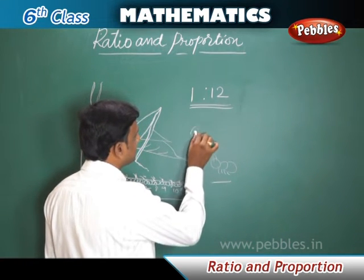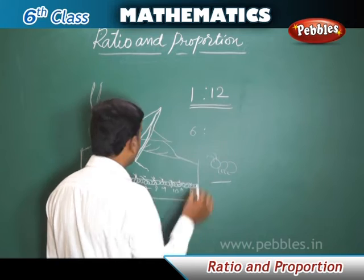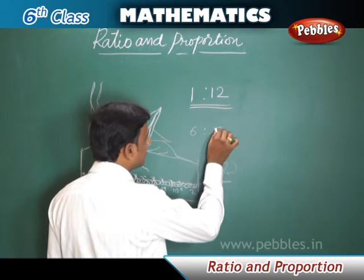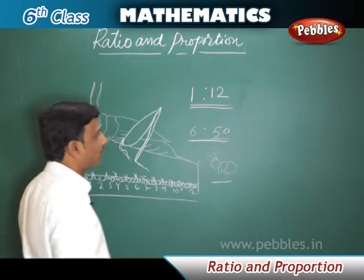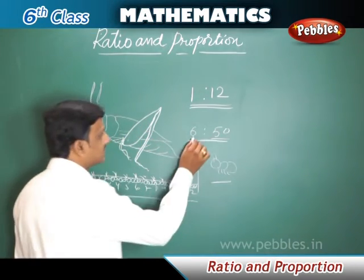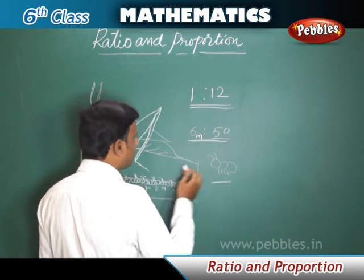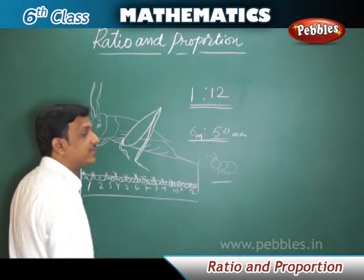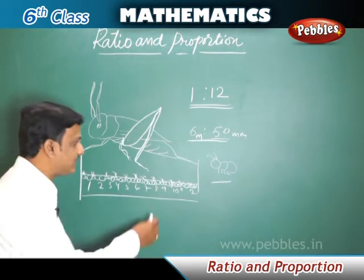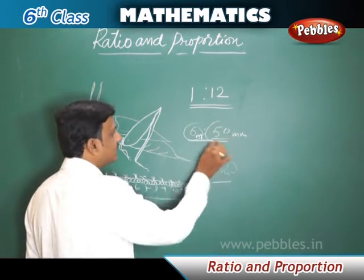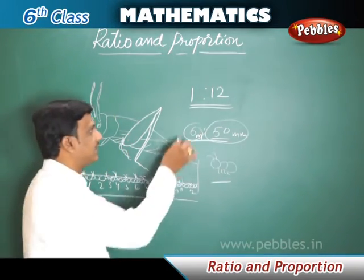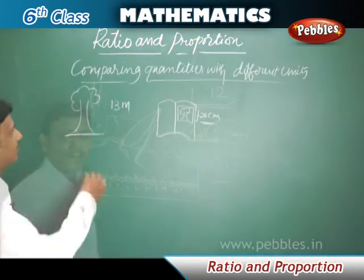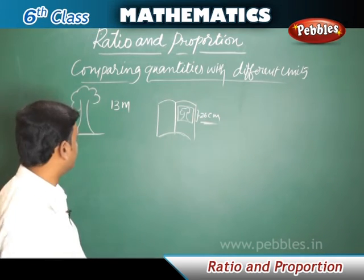If we just measure their lengths — the ant is 6 millimeters and the grasshopper is 5 centimeters, which is 50 millimeters — we get 6 is to 50, and that does not give us a proper idea because the difference is very large. Whereas comparing by fitting ants along the grasshopper gives us a much better idea. This is a better comparison when dealing with quantities of different units.